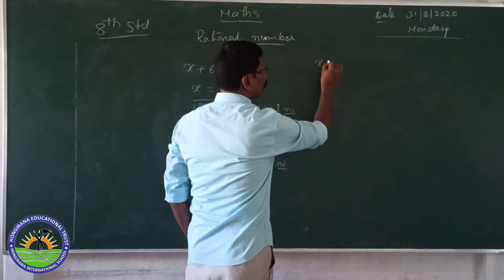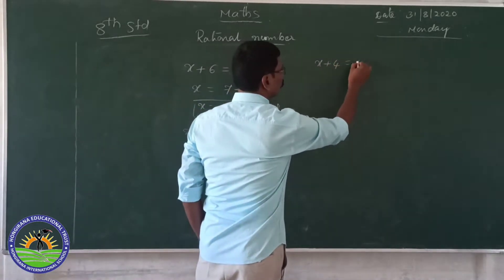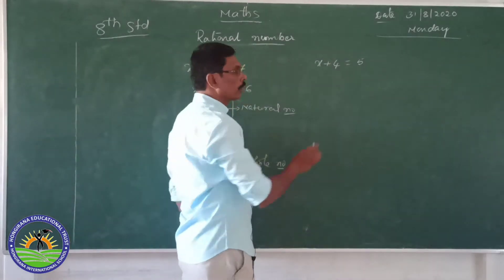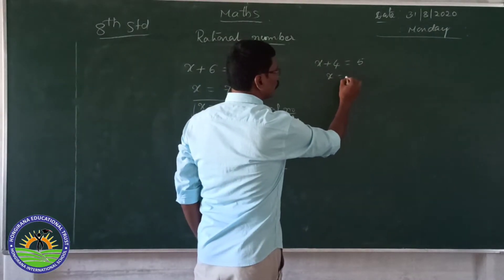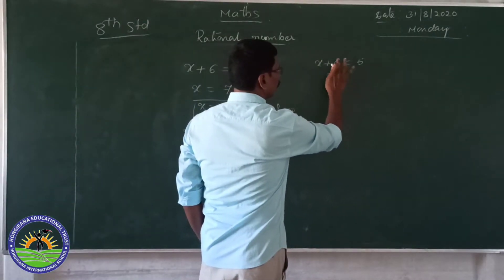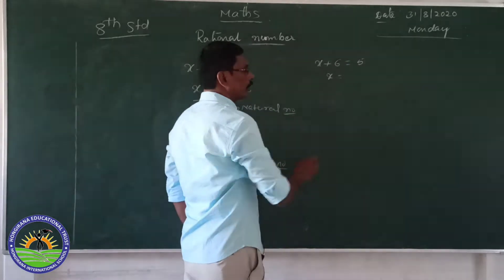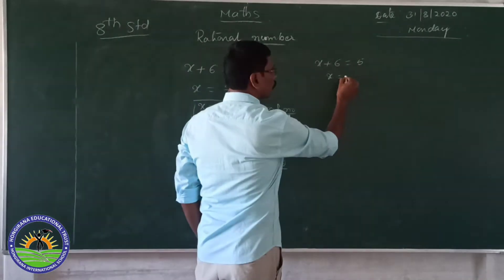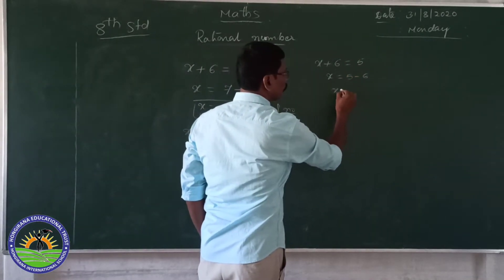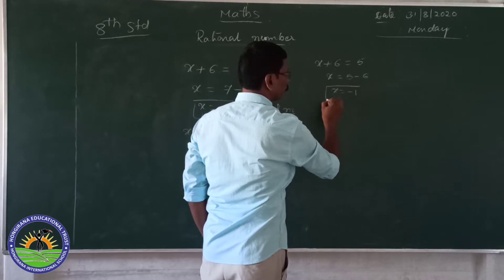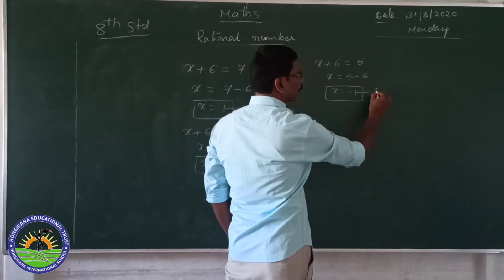We can take another example: x plus 6 is equal to 5. So x is equal to 5 minus 6, which gives x is equal to minus 1. This is an integer.